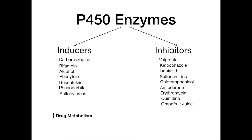The P450 inhibitors are: valproic acid (aka valproate), ketoconazole, isoniazid, sulfonamides, chloramphenicol, amiodarone, erythromycin — and with erythromycin, it's really all of the macrolides with the exception of azithromycin — quinidine, and grapefruit juice.